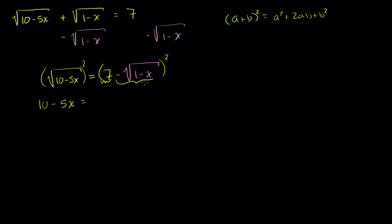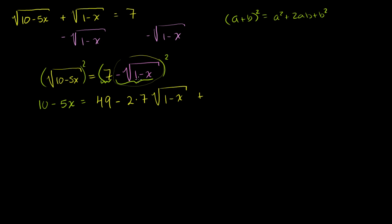If we expand this out, it's going to be 7 squared, which is 49, and then plus 2 times 7 times this. Since b is negative, it's going to be minus 2 times 7 times the square root of 1 minus x. And then finally plus this term squared. The negative squared becomes positive, and the square root of 1 minus x squared is just 1 minus x.